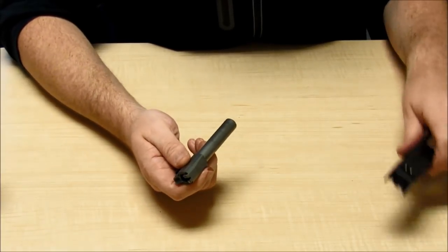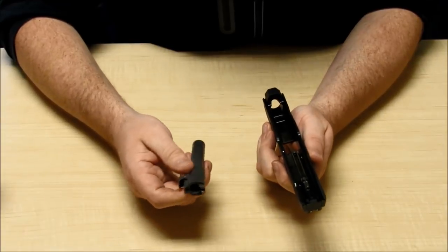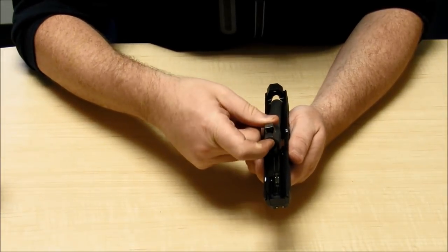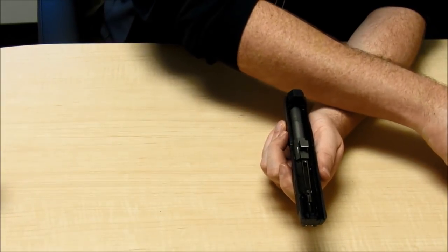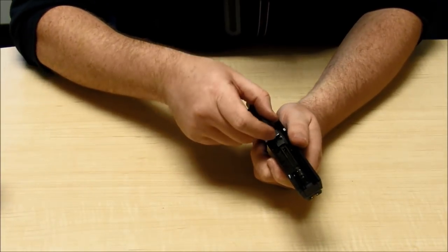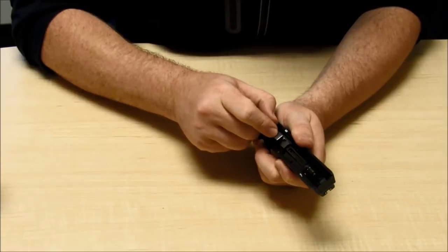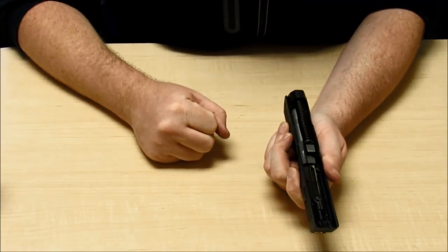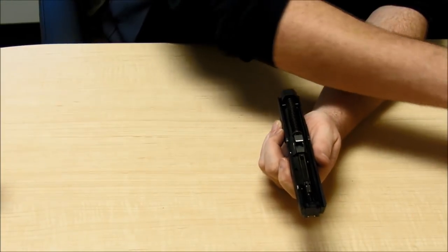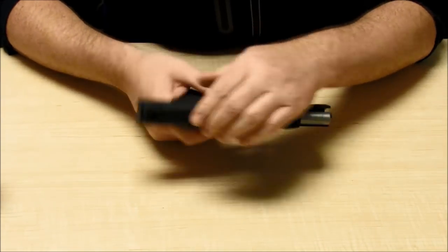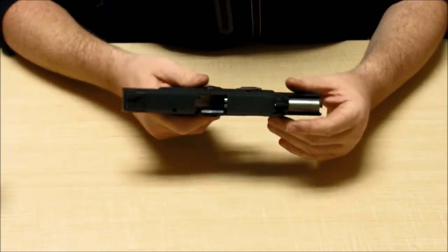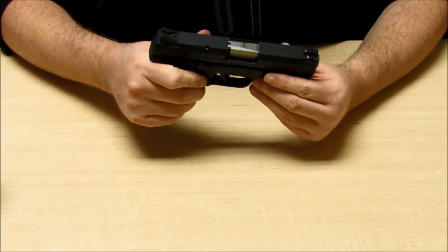So to put this back together again, we're just going to drop it back in, lock that into place. We're going to take that recoil mechanism. We're going to pop that back in, give a little compression, put it in there, and then slide this back in. Lock it back, push the lever up, and you are back in business.